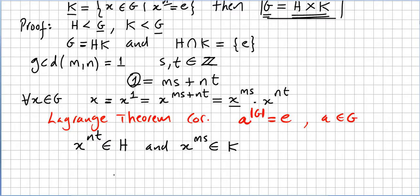So G is going to be equal to H times K, because this element X to the power of NT will be in H and X to the power of MS will be in K. Any element in G will be a product of an element of H times an element of K.